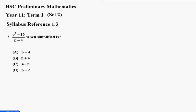Question 3. p squared minus 16 divided by p minus 4, when simplified, is a, b, c or d.